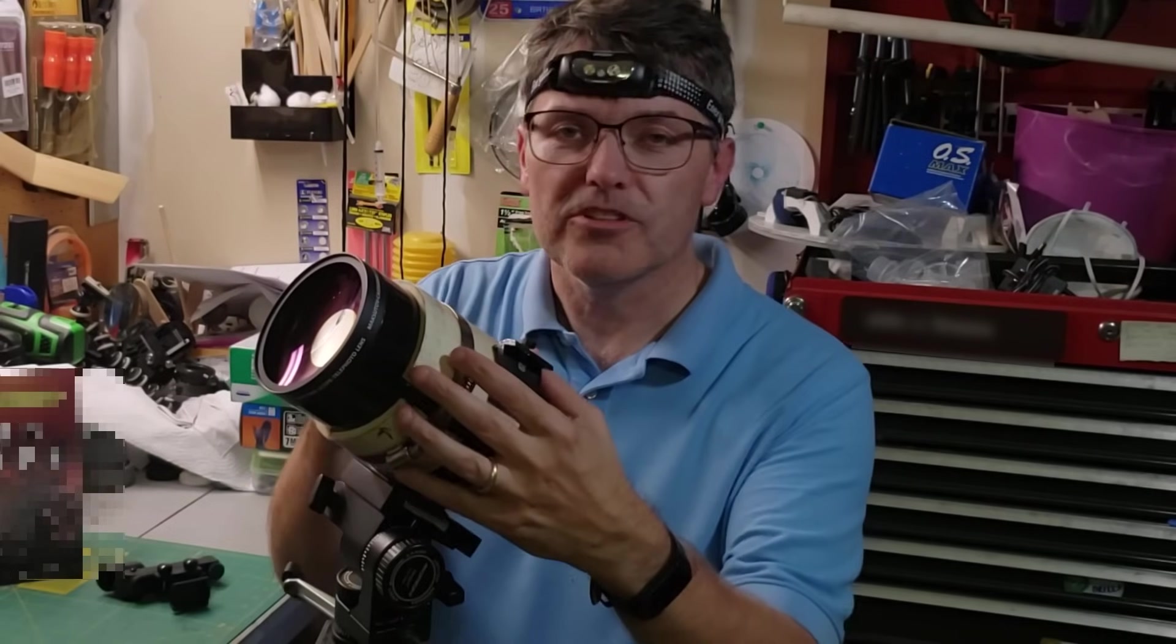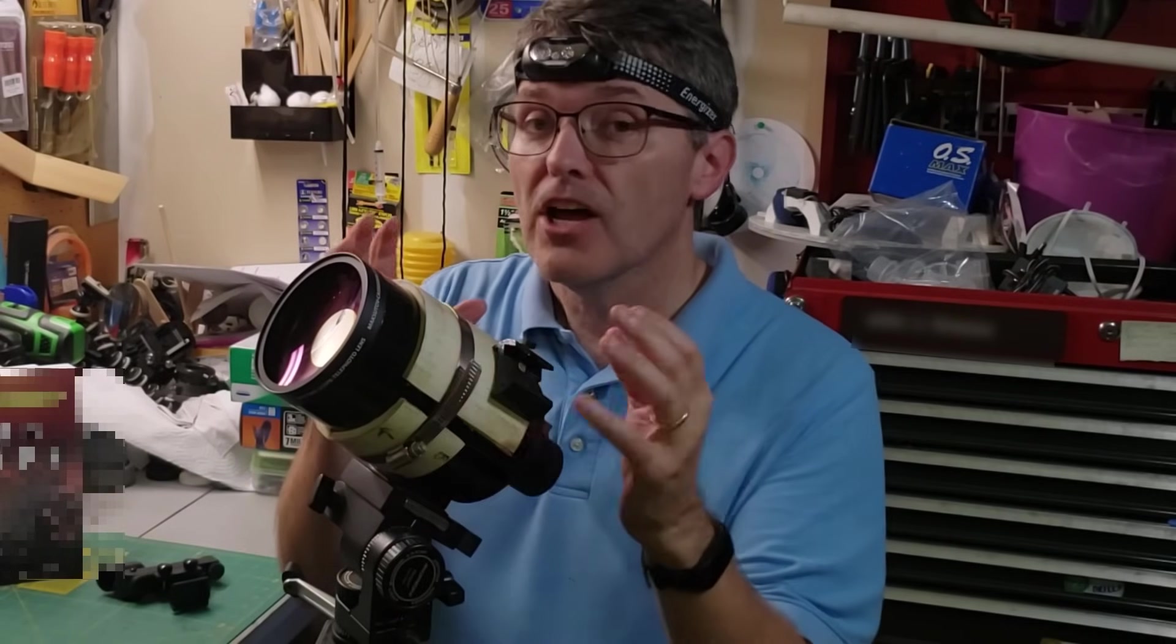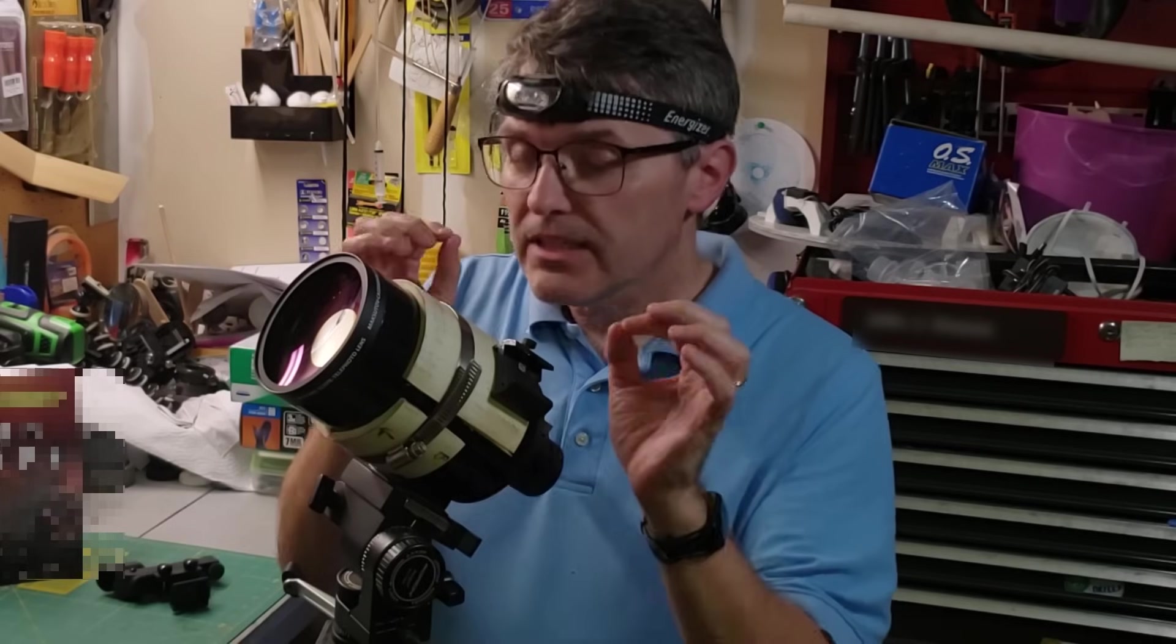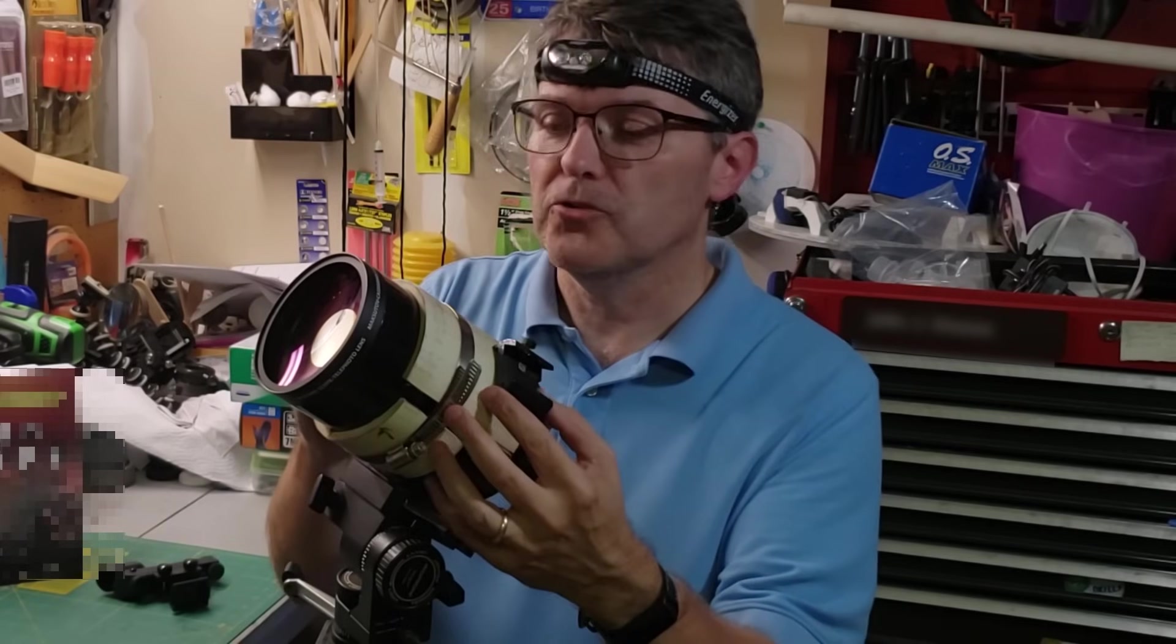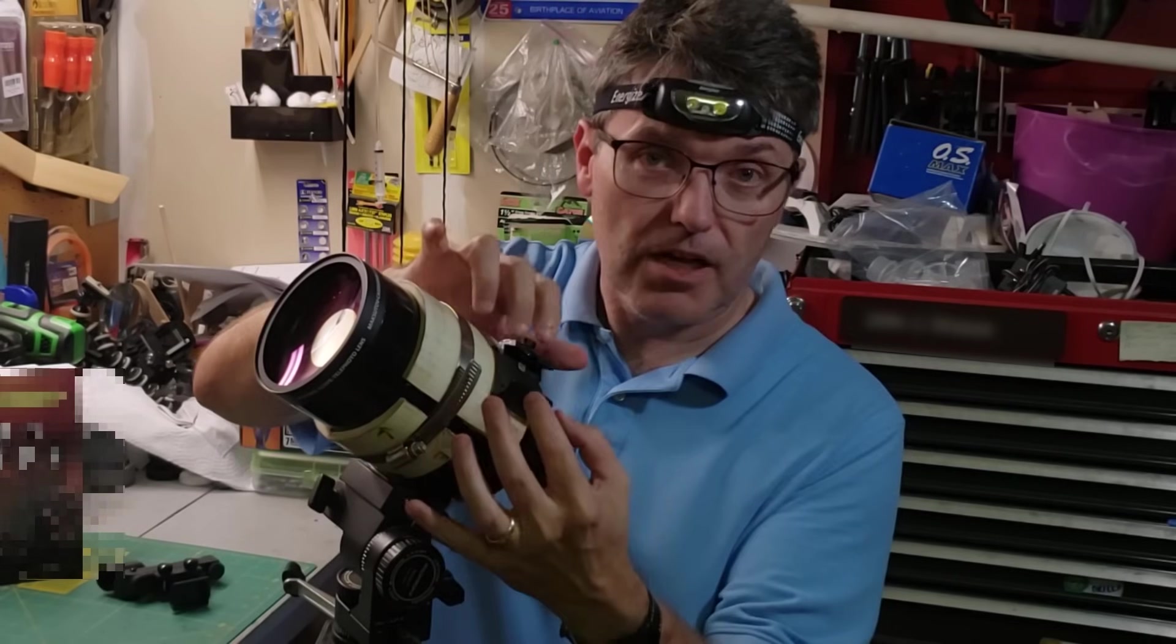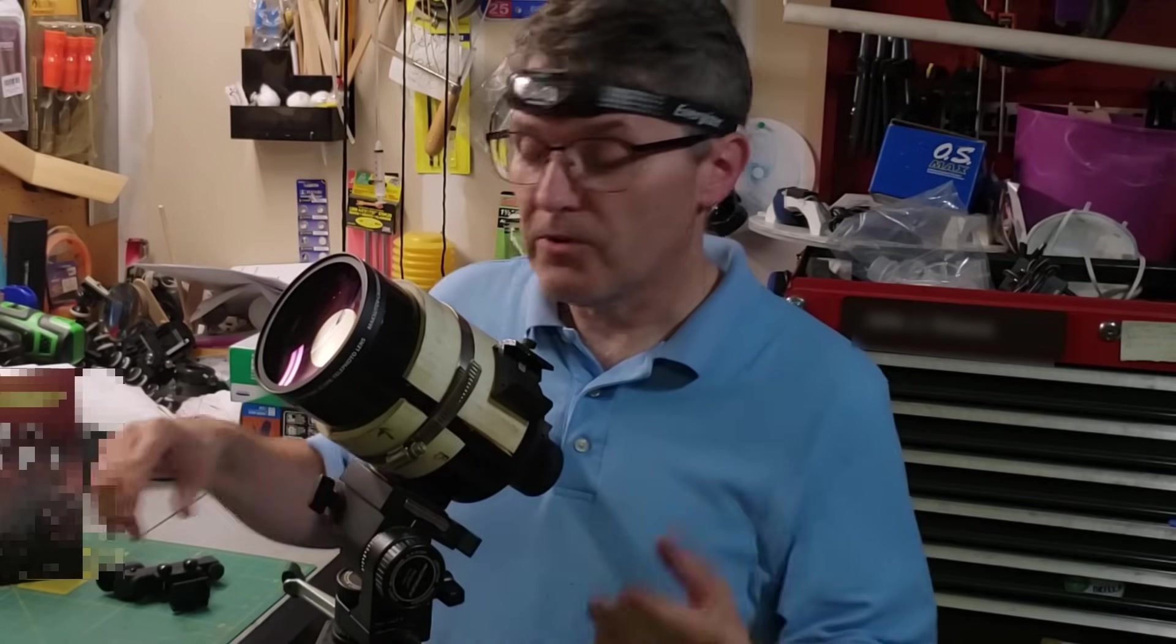To understand what this armor is for, you need to know that telephoto lenses don't usually come with a viewfinder on them. And what I believe the previous owner was trying to do was they were attempting to have a quick-release viewfinder. So they have the dovetail mount block right here.